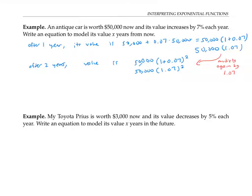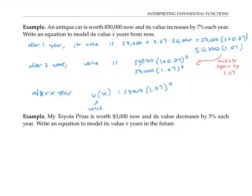And in general, after x years, the antique car's value will be 50,000 times 1.07 to the x. That's because the original value of 50,000 gets multiplied by 1.07 x times — once for each year.